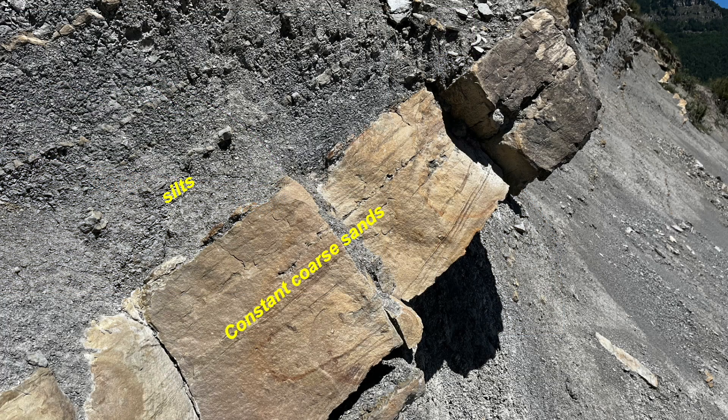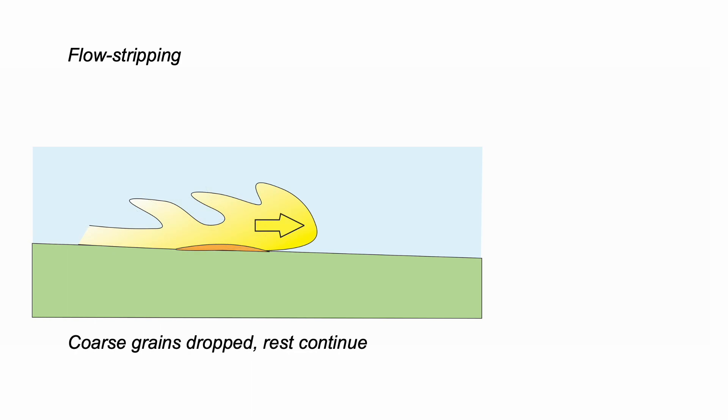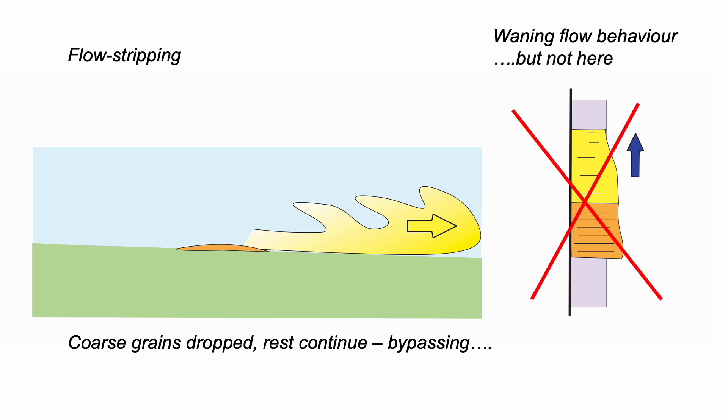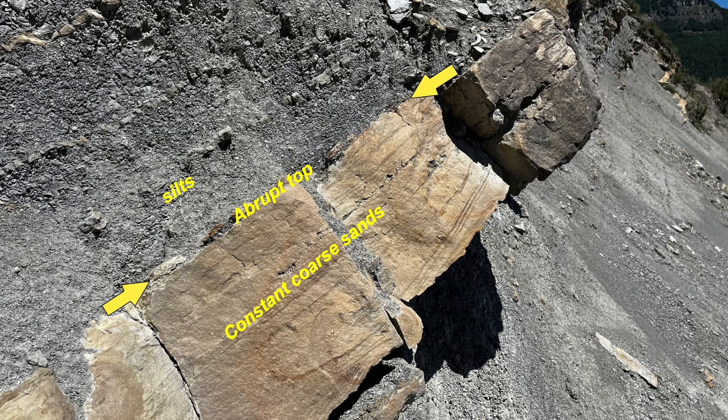Abrupt tops. Formed like this. Flow decelerates enough to drop out the coarse grains, but keeps going carrying the rest of the sediment load with it. This is called flow stripping. And it's diagnostic of the rest of the flow bypassing this area, continuing on down the system. Rather than beds that graded out, as in a Boumer cycle. No, these have abrupt tops. Distinct grain size breaks. And that's what we see in outcrop all along this road section.